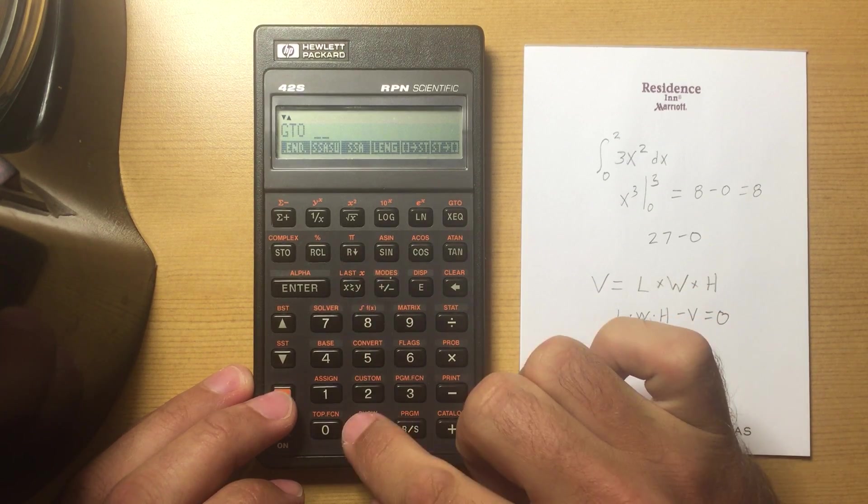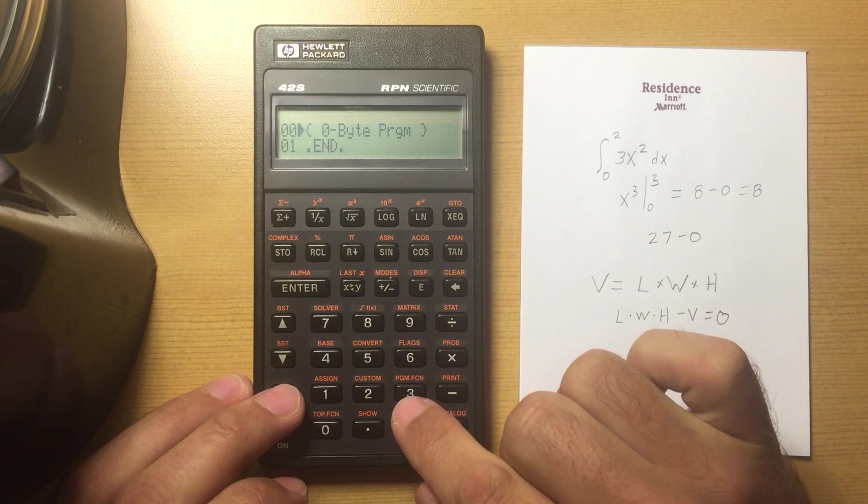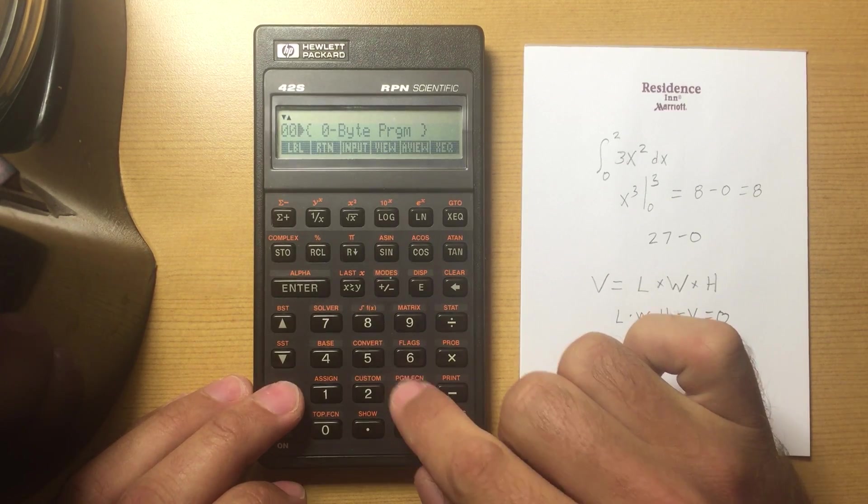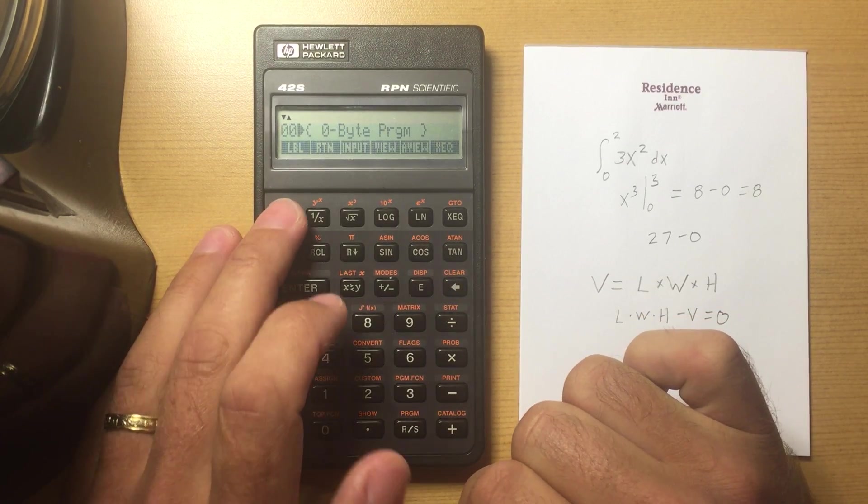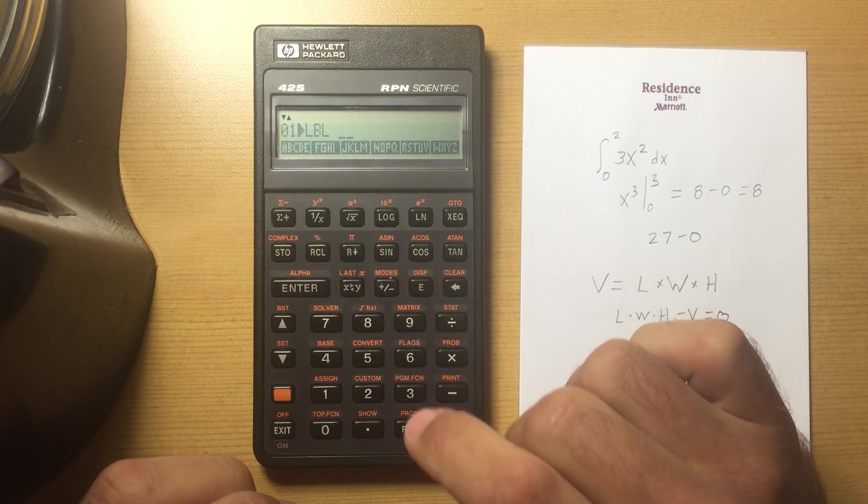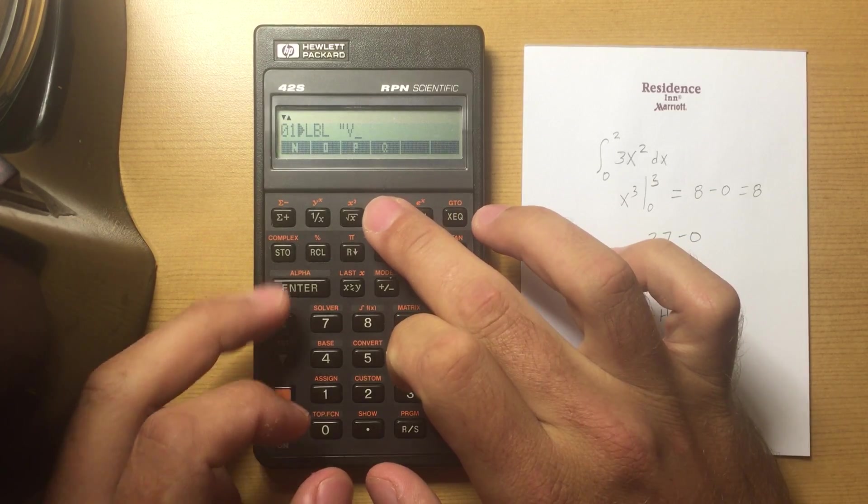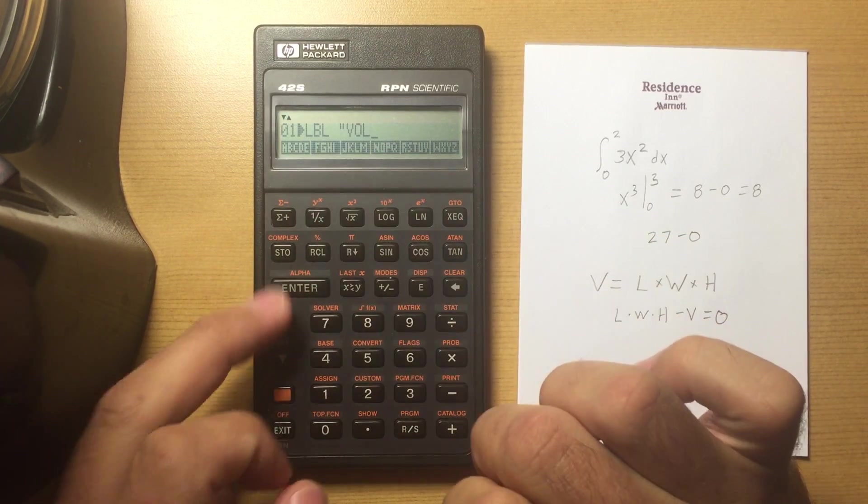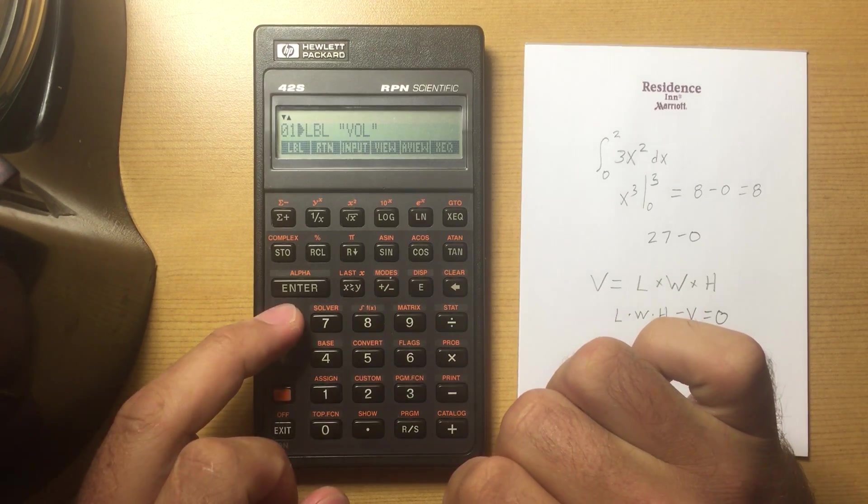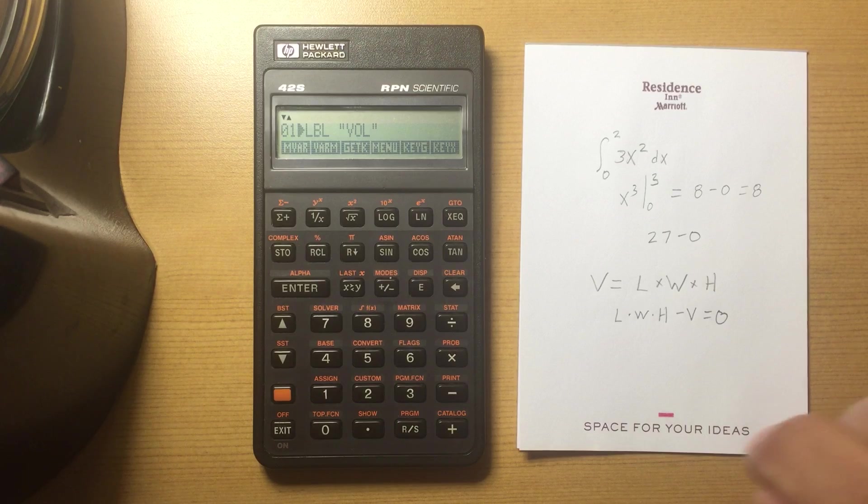I'm going to lock my program function menu and put in a label—let's just call this VOL. Now I'm going to put in my M variables, but to make